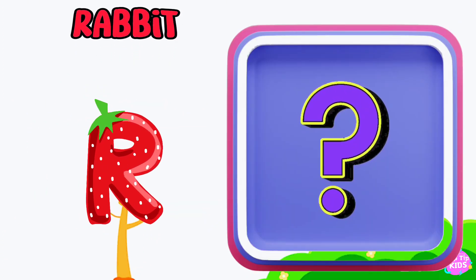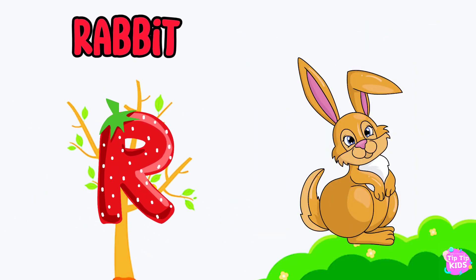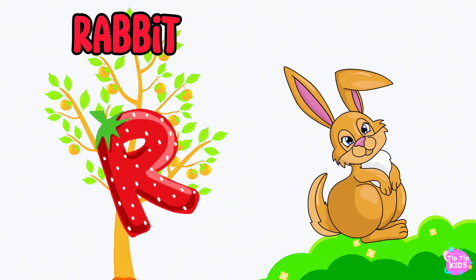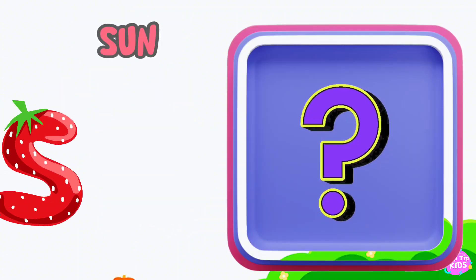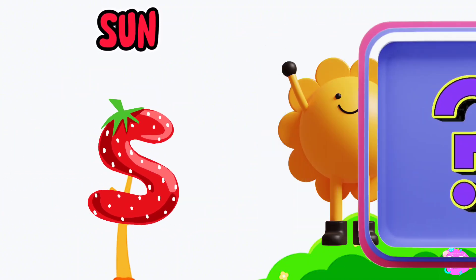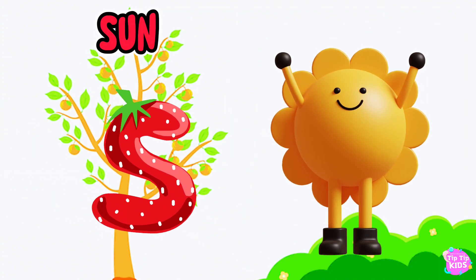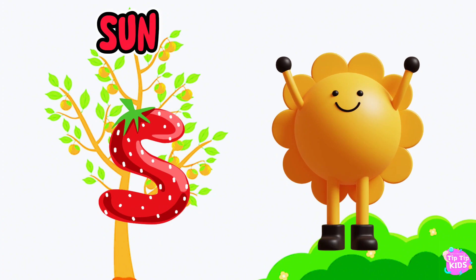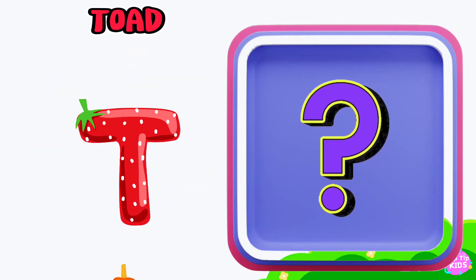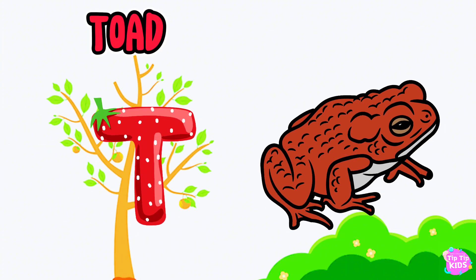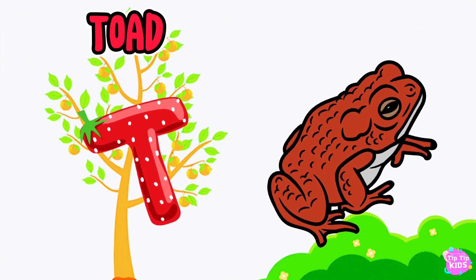R is for rabbit, r-r-rabbit. S is for sun, s-s-sun. T is for toad, t-t-toad.